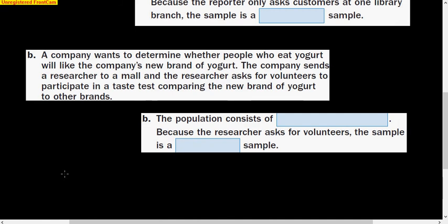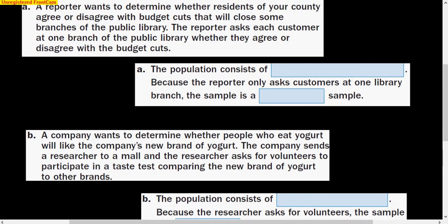Let's jump into some examples here. A reporter wants to determine whether residents of your county agree or disagree with budget cuts that will close some branches of the public library. The reporter asks each customer at one branch of the public library whether they agree or disagree with the cuts. The population that you would want to ask is all of the people in the county, all residents of the county.